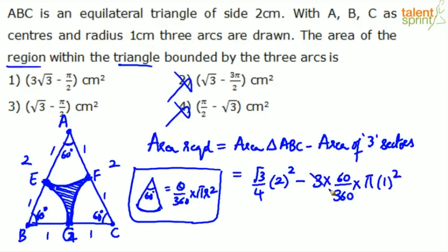Now simplify. 3 × 60 is 180, 180 goes into 360 two times. 2² and 4 gets canceled. So we are left with √3 minus π × 1 × π divided by 2. So √3 - π/2 square centimeters will be the answer. √3 - π/2, option 3 is the final answer.